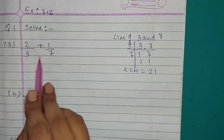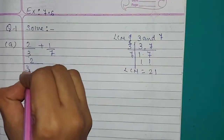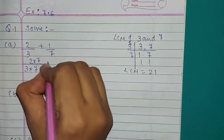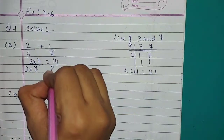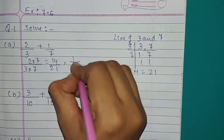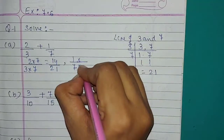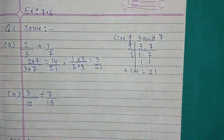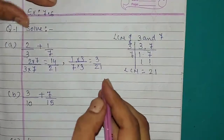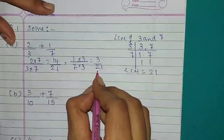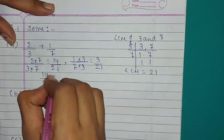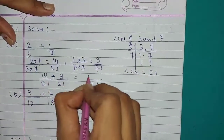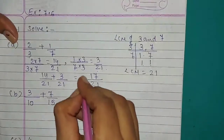Now we will make denominator 21 on both sides. For 2 upon 3, we multiply by 7 upon 7: 2×7=14, 3×7=21. For 1 upon 7, we multiply by 3 upon 3: 1×3=3, 7×3=21. So we add 14 upon 21 plus 3 upon 21. Denominator 21 is same. 14 plus 3 is 17. Answer is 17 upon 21.